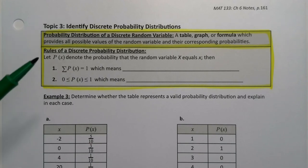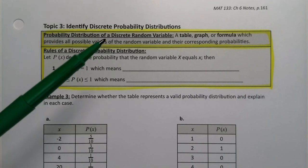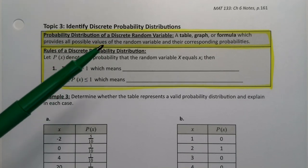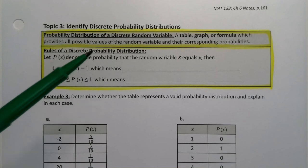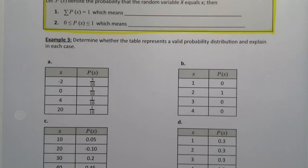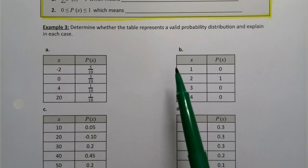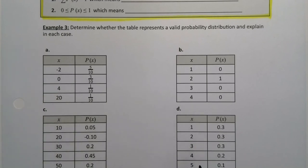We've seen both of these definitions and rules before, but it bears repeating. A probability distribution is a table, a graph, or formula which provides all the possible values of the random variable and their corresponding probabilities. In this section, that variable will definitely be a discrete random variable, whereas in chapter 5 sometimes they could be words.